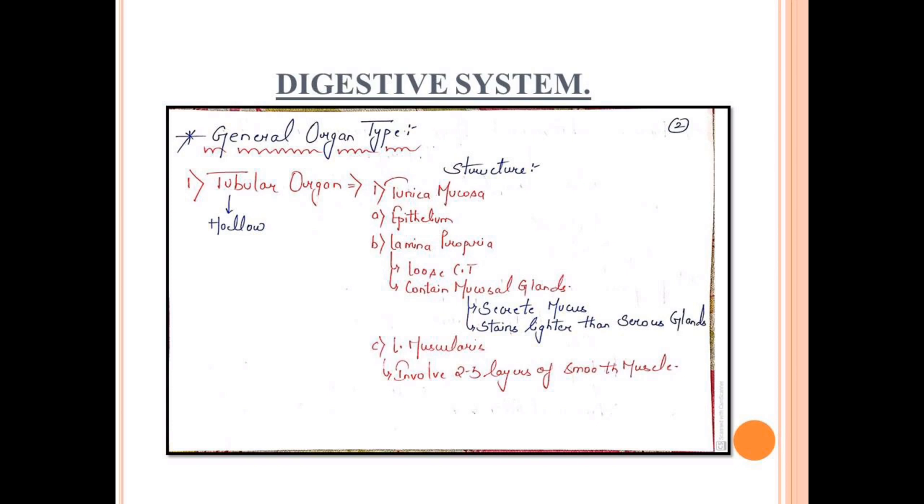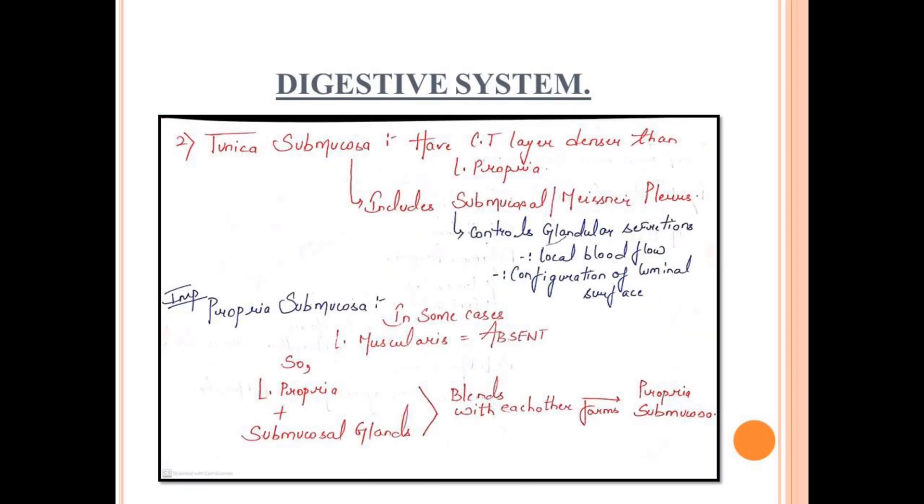Now we will talk about the general organ types: tubular organ or hollow organ, and another one is parenchymatous or solid organ. In the tubular organ it consists of several layers. First is tunica mucosa, the innermost layer lying next to the lumen. It consists of epithelium, lamina propria composed of loose connective tissue containing mucosal glands. The mucosal gland's function is to secrete mucus and its characteristic feature is that it stains lighter than serous glands.